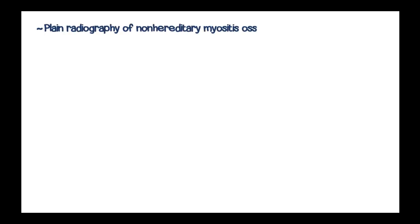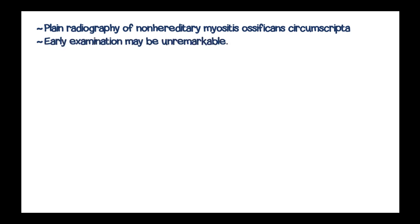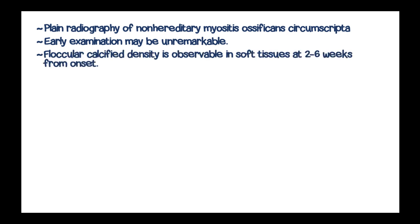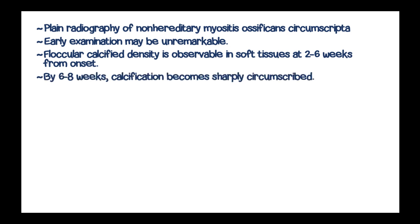For diagnosis, use plain radiographs of non-hereditary myositis ossificans circumscripta. Early examination may be unremarkable, and a floccular calcified density becomes observable in soft tissues at about two to six weeks from onset. By the sixth to eighth week, calcification becomes sharply circumscribed and ossification tends to adhere to the periosteum.